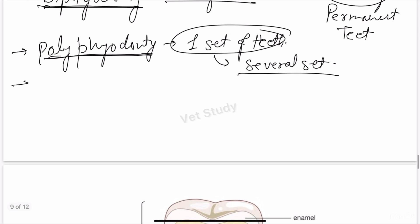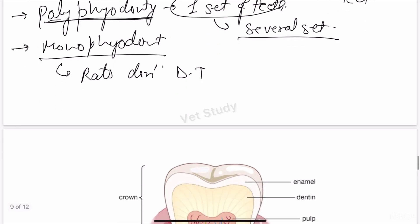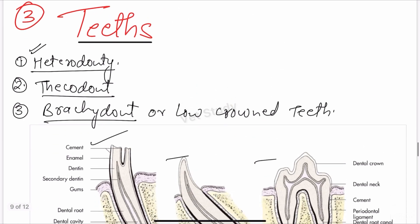Next we have monophyodont. Monophyodont refers to animals which do not have deciduous teeth — for example, rats. Rats do not have deciduous teeth; this is a very important question. They possess only permanent teeth for their lifetime. So monophyodont example is rats. All the terminologies — heterodonti, thecodont, brachydont, hypsodont, diphyodont, polyphyodont, and monophyodont — are now clear.